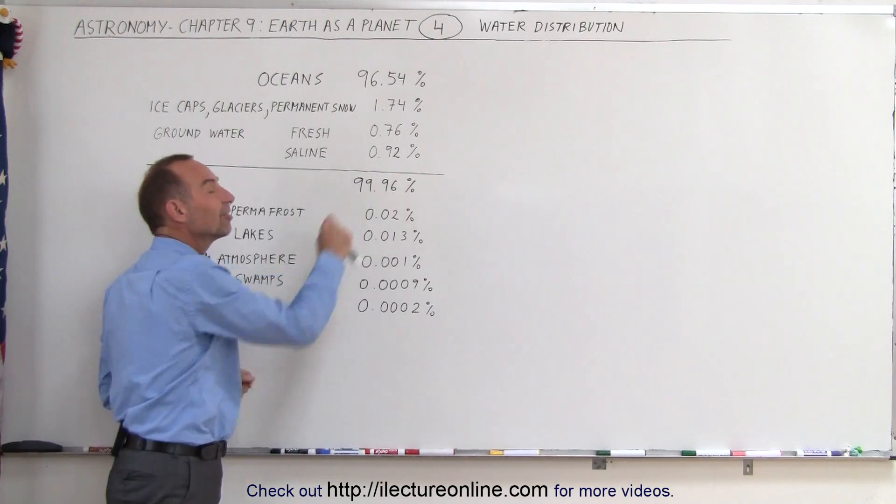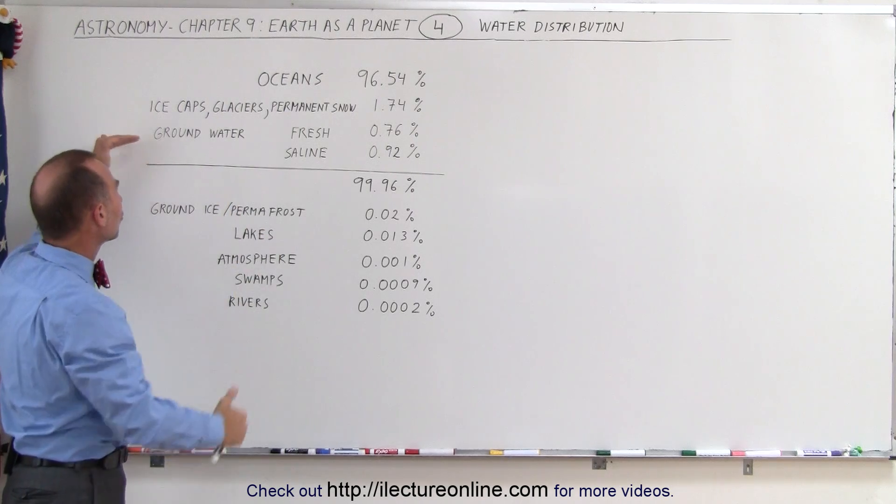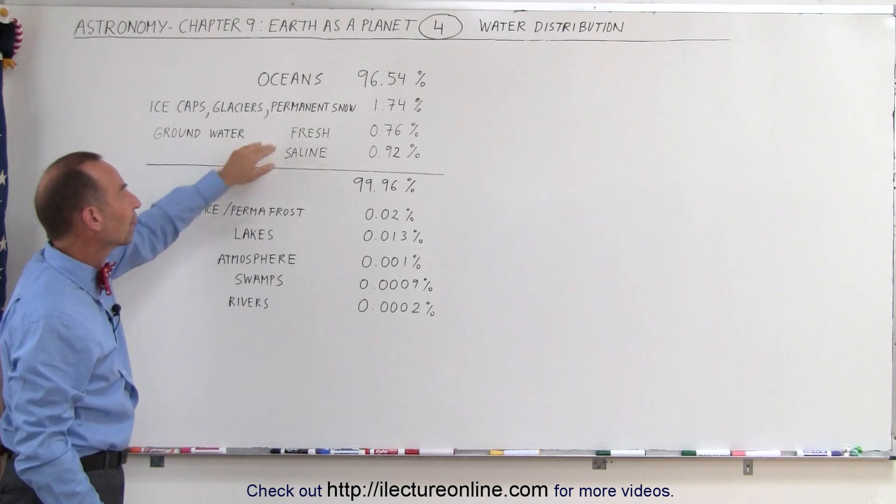Adding all that together, we can see that 99.96% of all the water is contained either within the oceans, the ice caps, the glaciers, snow, or groundwater, either fresh or saline.